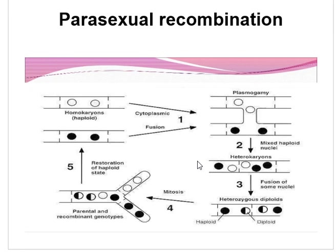Since then, the parasexual cycle has been discovered not only in several members of Deuteromycetes but also in fungi belonging to Ascomycetes and Basidiomycetes. So this parasexual recombination occurs in some fungi where the original sexual cycle is not present, and they reproduce by parasexual recombination. The steps involved in parasexual recombination begin with the formation of heterokaryotic mycelium.